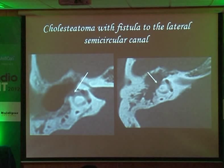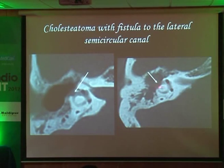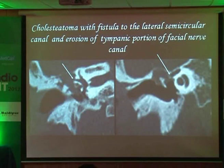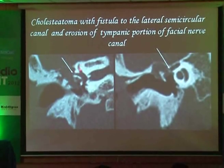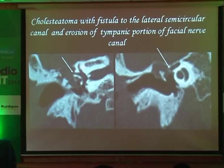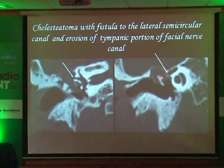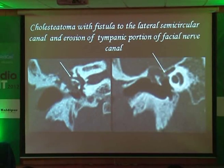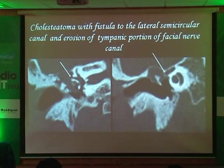Labyrinthine fistula is a complication — as Manoj beautifully brought out. You can see here the lateral semicircular canal with erosion creating a fistulous communication between the middle ear and the inner ear. On the coronal plane, there is loss of bone between the lateral semicircular canal and the middle ear, while the superior semicircular canal and its cortical bone remain intact. And in this illustration, the tympanic portion of the facial nerve is eroded. So cholesteatomas can erode ossicles, the tegmen, the bony covering of the labyrinth, or the facial nerve.